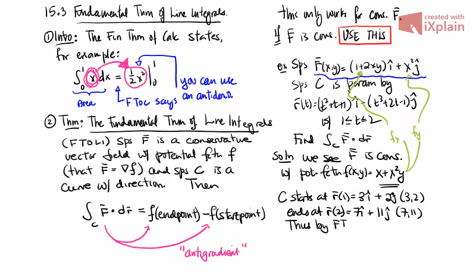Thus, totally by the fundamental theorem of line integrals, this integral that we want is little f of 7, 11 minus little f of 3, 2. And we have little f. So this is, I have little f is x plus x squared y. This is 7 plus 7 squared 11 minus 3 plus 3 squared 2. That is it. That is the final answer. Done. Right there.